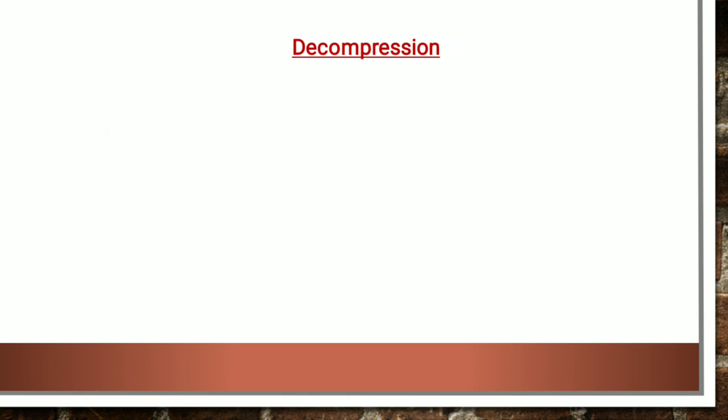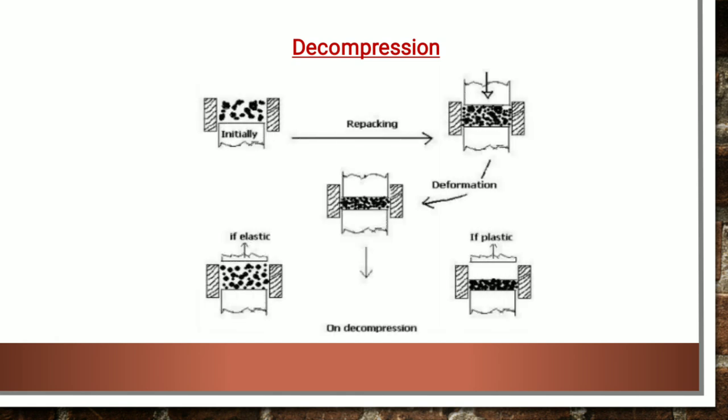Then the next one is decompression. The success or failure of producing an intact tablet depends on stress generated by elastic rebound and the associated deformation process during decompression and ejection. As the upper punch is withdrawn from the die cavity, the tablet is confined in the die by radial pressure. Consequently, any dimensional change during decompression must occur in the axial direction.